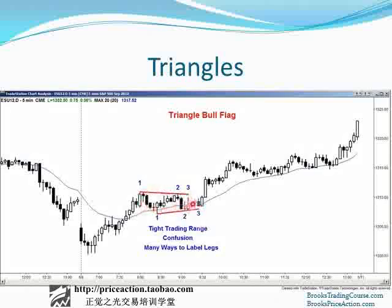All triangles are tight trading ranges. This one is fairly tight and it's confusing. When you're at this point in the day you're saying, I don't know what's going on — this might break to the downside, it might break to the upside. And there are also many ways to label this to try to highlight the existence of a triangle. You can buy the reversal up at two, you can buy the reversal up above three. Looking at three pushes down — one, two, and then this bear bar third push down — so this bull bar is a buy. You could wait for the breakout and buy that bar, or buy above the pullback from the breakout.